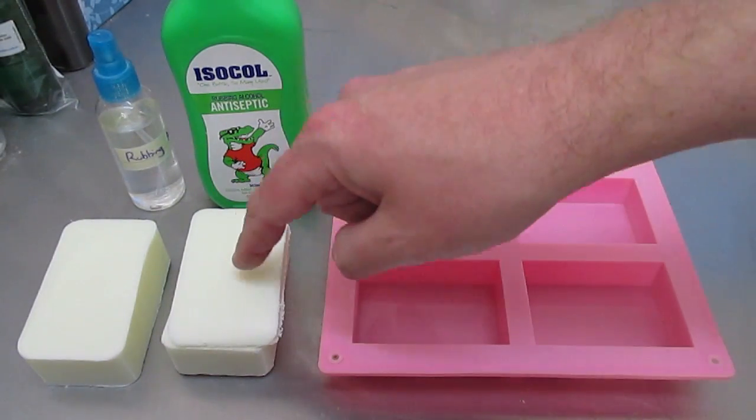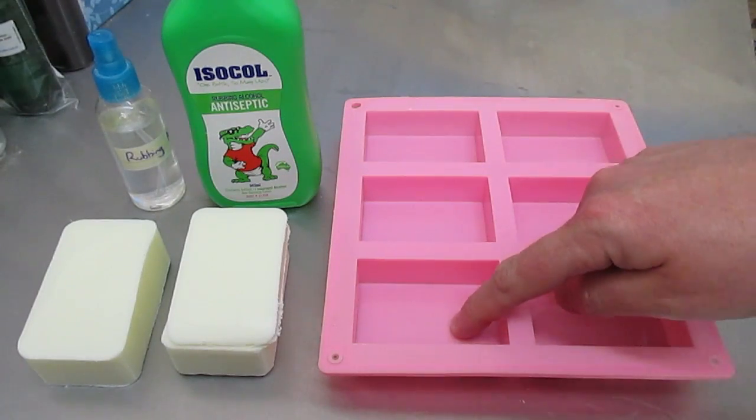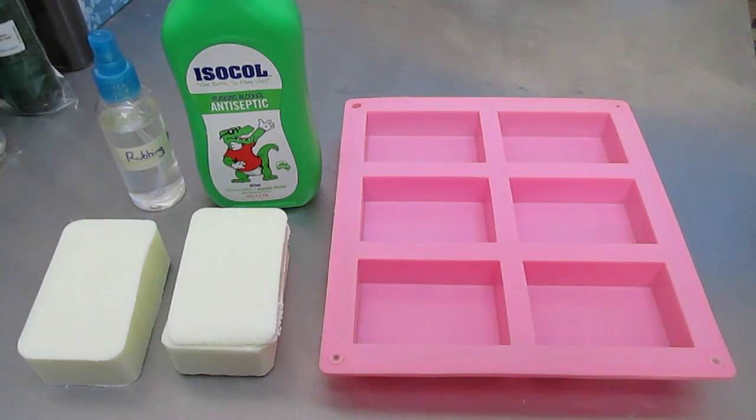I'm then going to put cardboard over one and spray one and leave the other one unsprayed. So when I go to melt down the second lot and pour it on top, one will have rubbing alcohol and one won't. So let's get started.